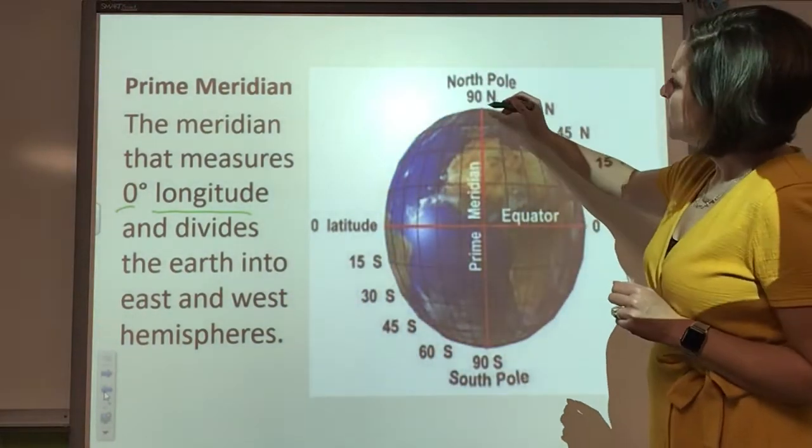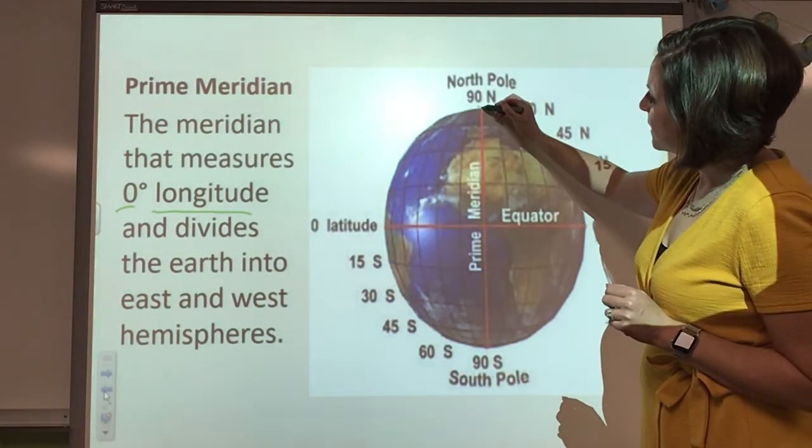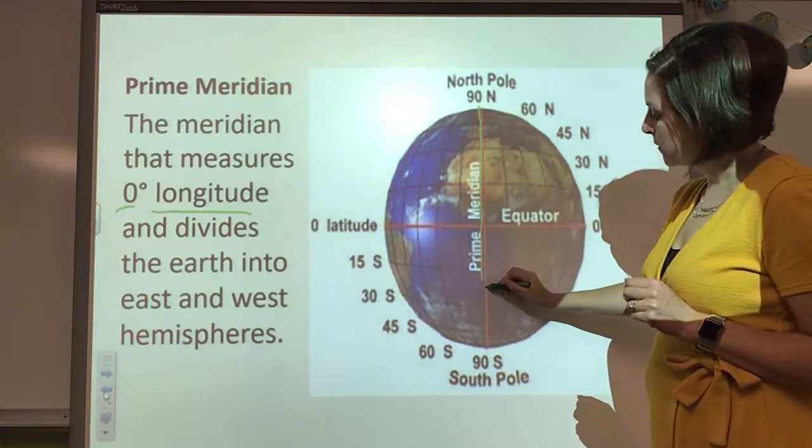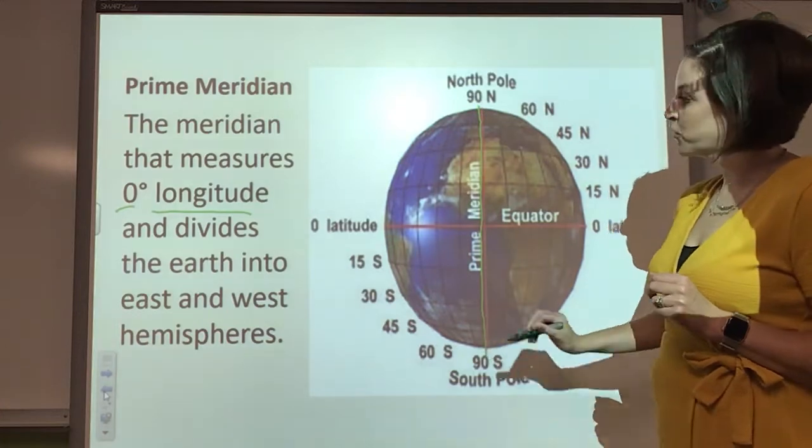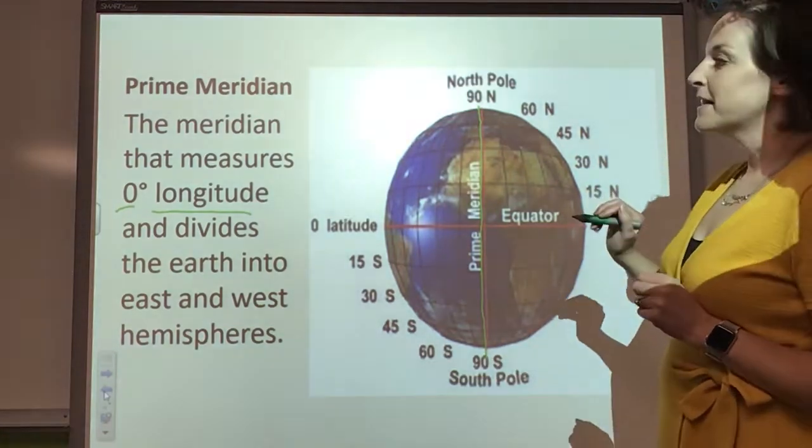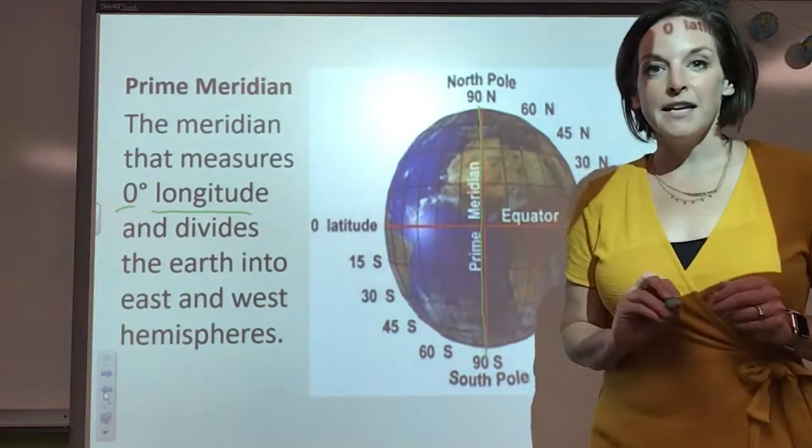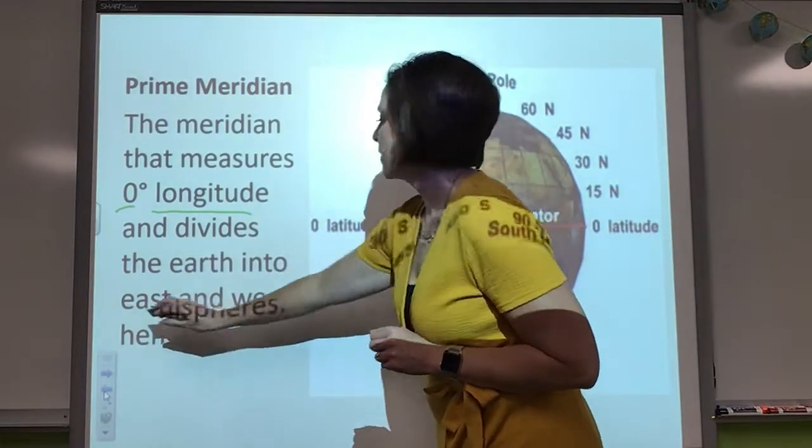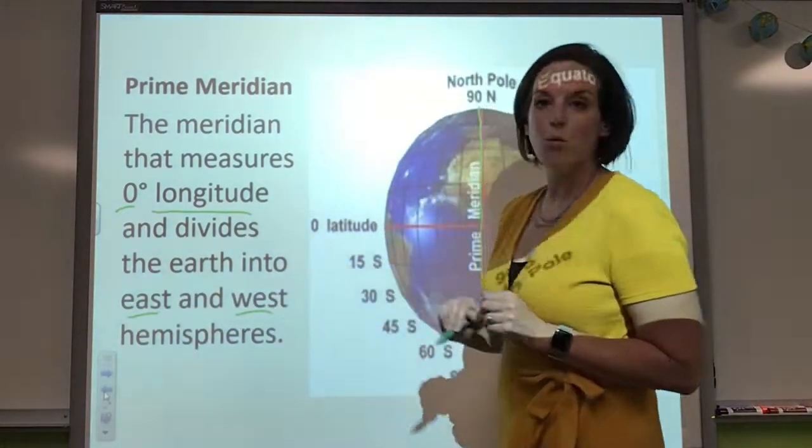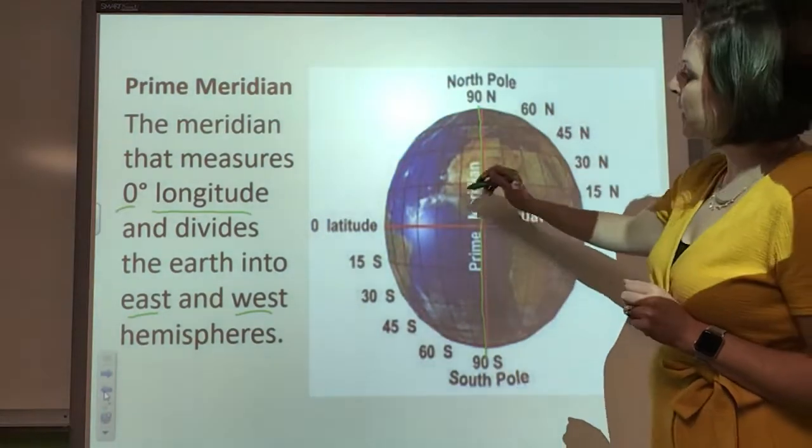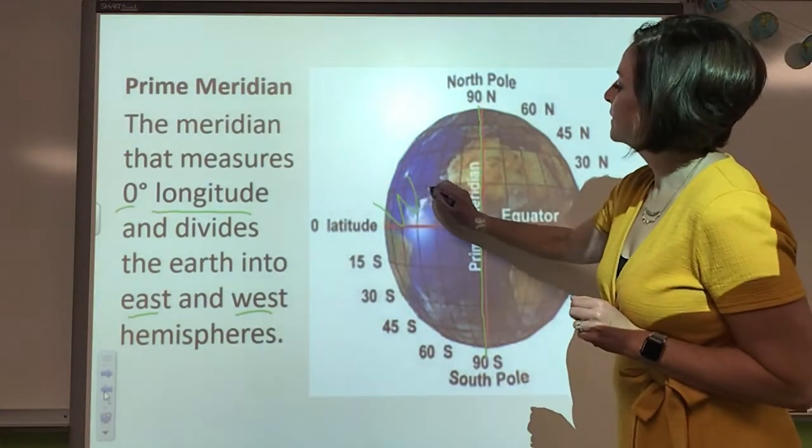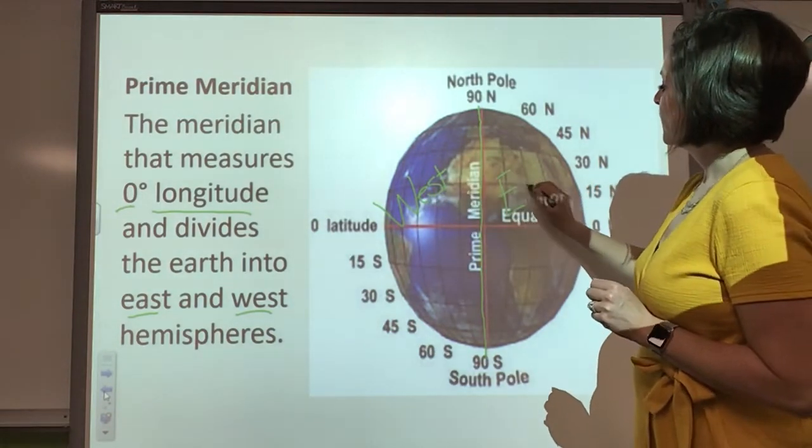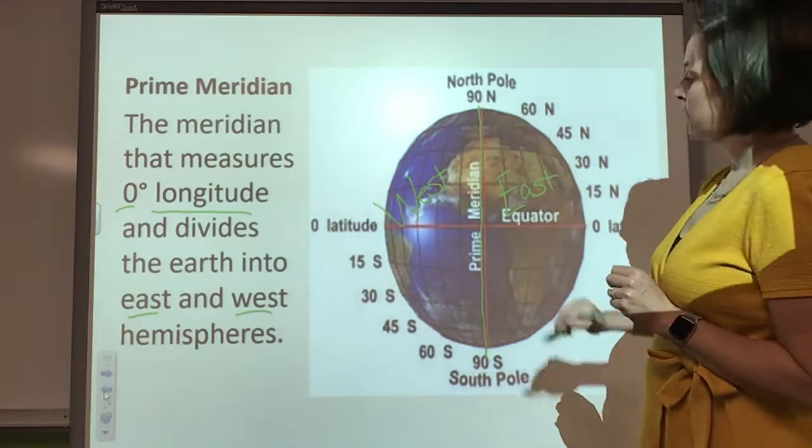So this one goes straight down. And this is going to divide into the eastern and western hemispheres. So over here is the west, and then over here is the east.